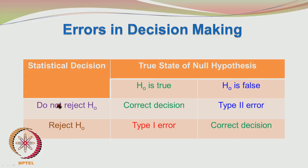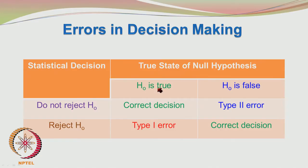When the statistical decision is do not reject H0 — implying accept H0 — and H0 is true, it is a correct decision, nothing more has to be said. If H0 is false and you are saying do not reject H0, implying accept H0, then this is a Type 2 error — we are letting a criminal go free.